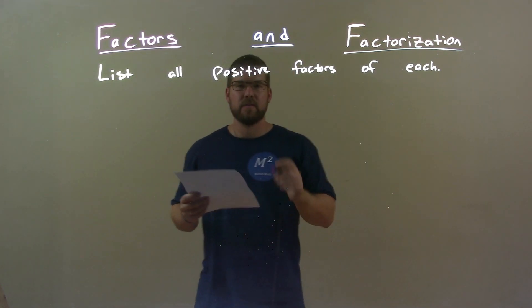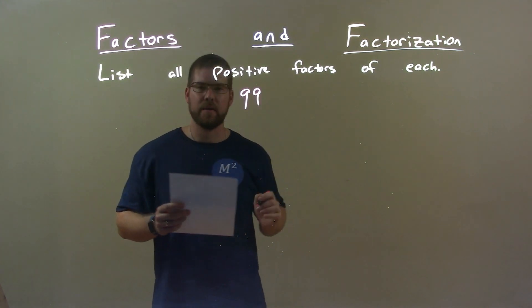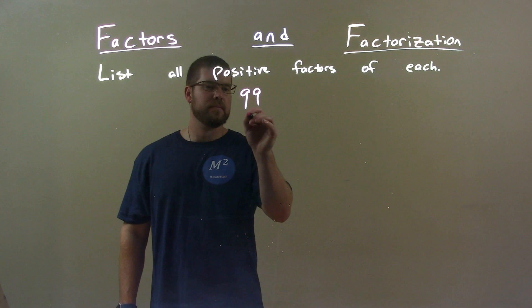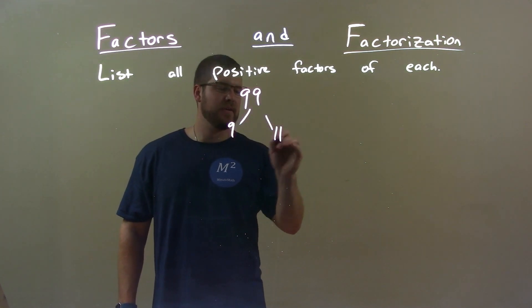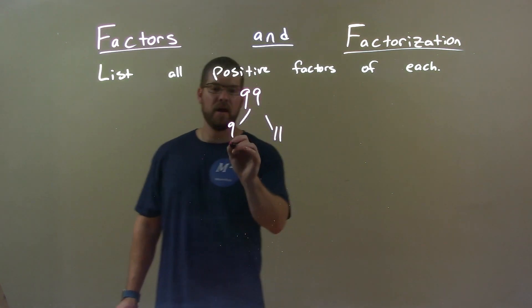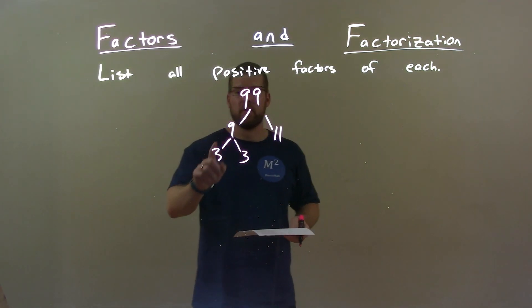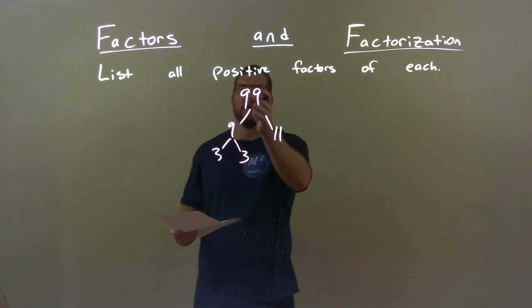So if I was given this number 99, well first thing I like to do is write my prime factorization of this. We know that 9 times 11 gives me 99 and 9 is just 3 times 3. So now I have a list of all prime numbers that multiply together to be 99.